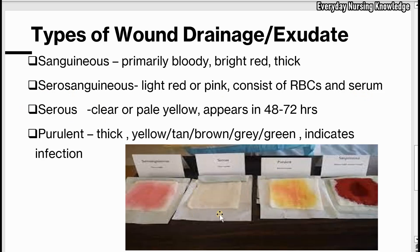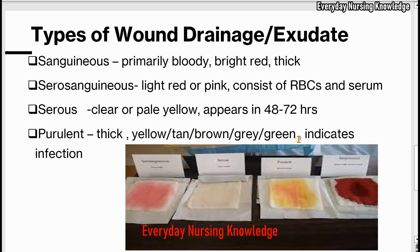Third is serous. Serous is clear or pale yellow in color. It appears at 48 to 72 hours and is a normal type of wound drainage. Fourth is purulent. Purulent is thick in consistency and can be yellow, tan, brown, gray, or green in color.